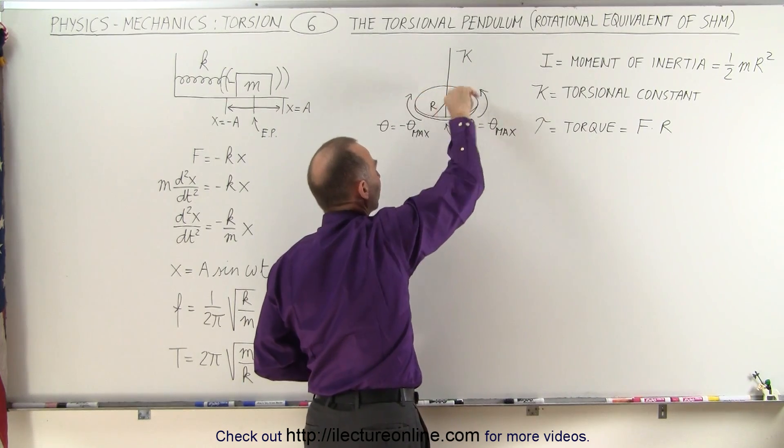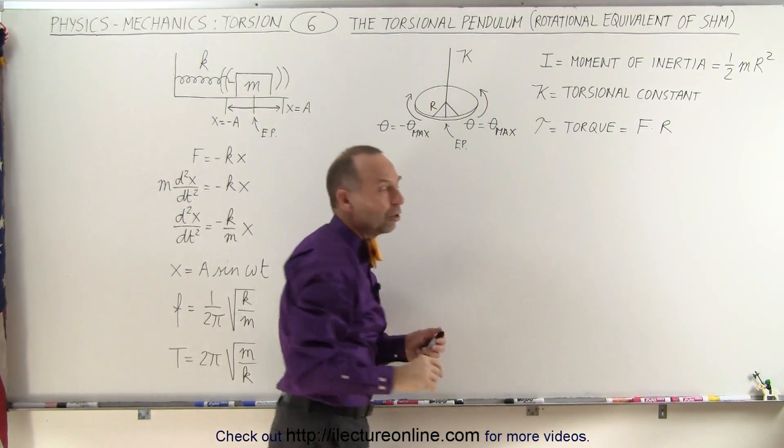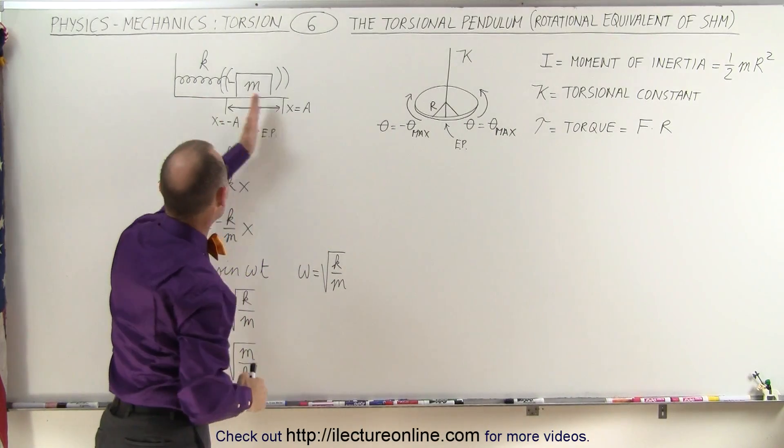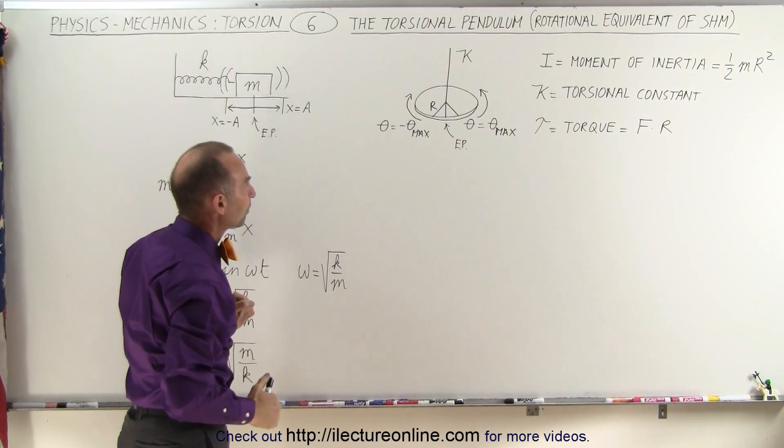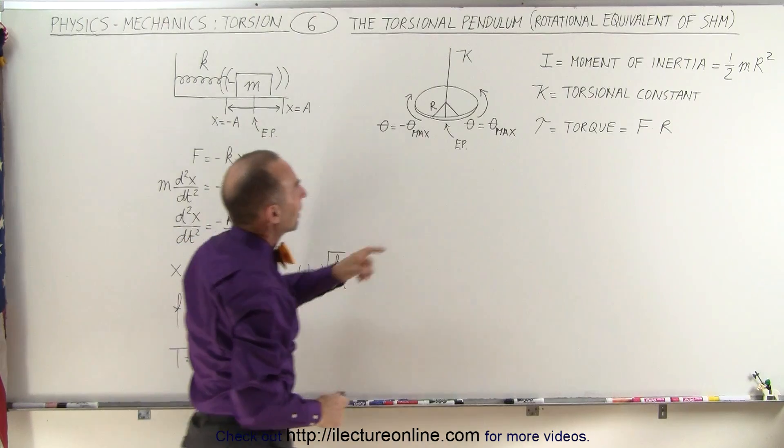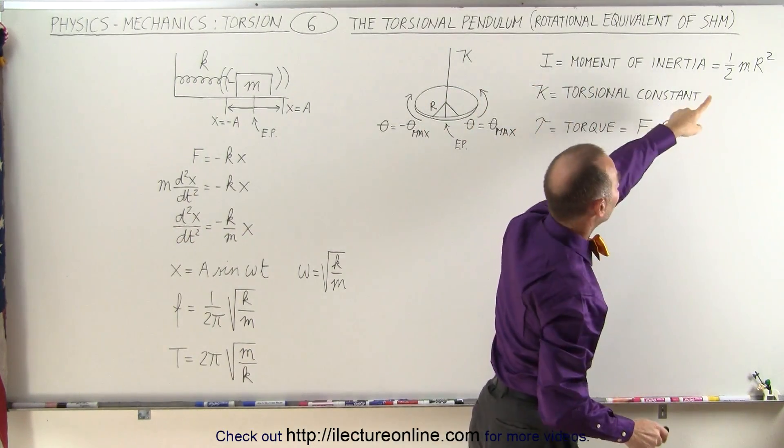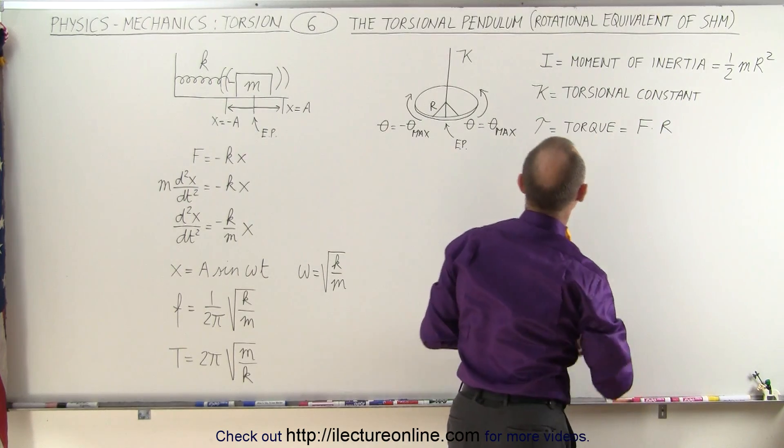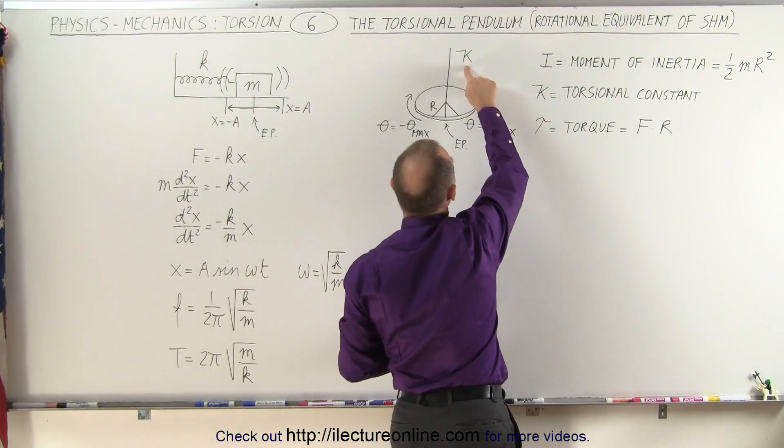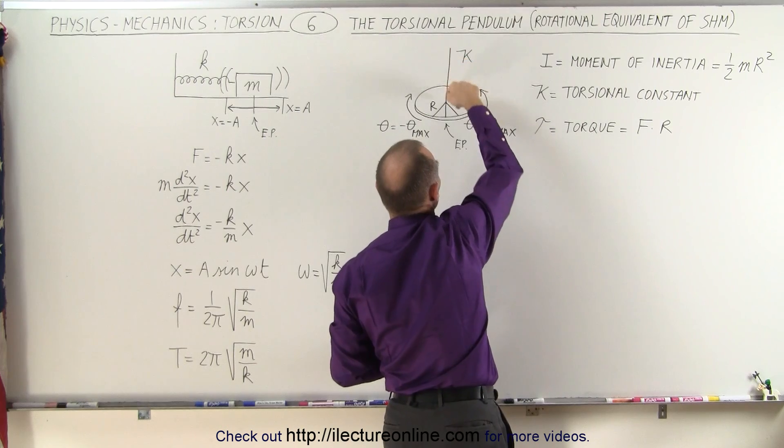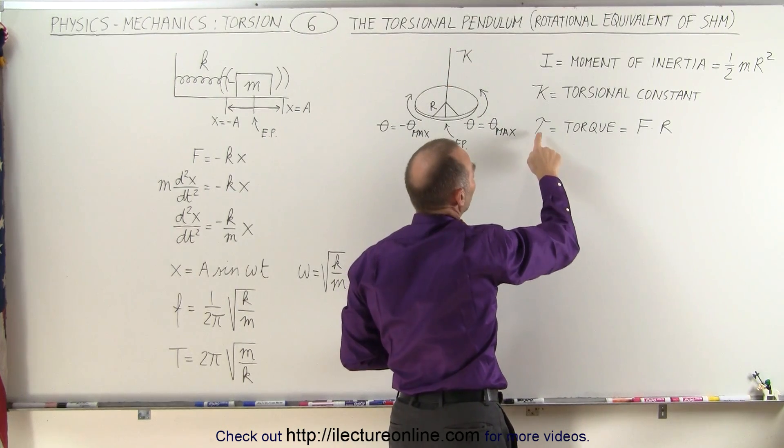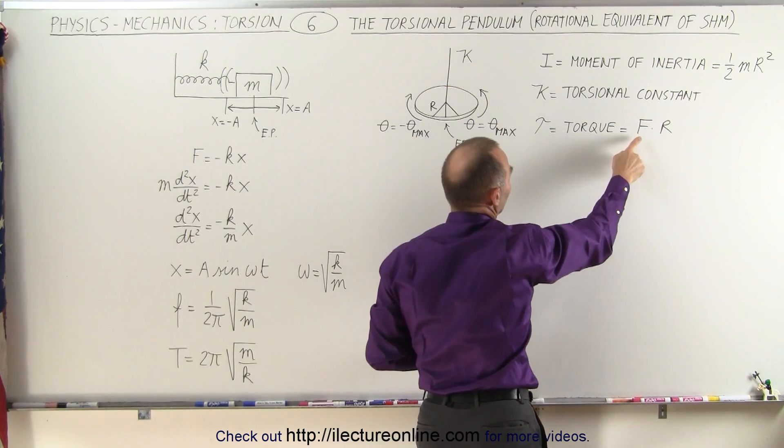And then this disc will then start rotating back and forth and back and forth, just like what we have here with the mass going back and forth like this. Notice that I is representative of the moment of inertia of a flat disc, which is one-half the mass times the radius squared. k is the torsional constant of this string, or this rod, or this wire.